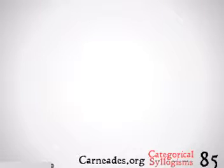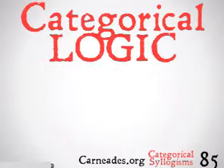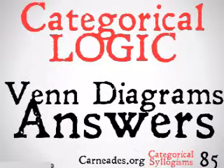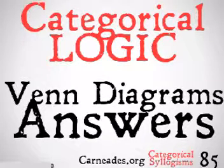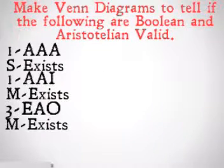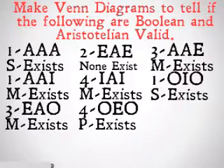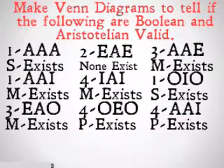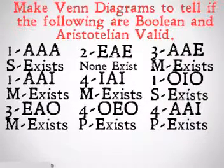Welcome back to 100 Days of Logic with Carnadius.org. Today we're going to be continuing with categorical logic and categorical syllogisms, looking at the answers to our Venn diagram problems that we offered in the last video. As with all of our answer videos, this is going to be a little bit longer so we can really flesh out why these are the correct answers. Your job is to make Venn diagrams for all of these problems to tell if they are Boolean valid and to tell if they are Aristotelian valid. It is cheating to just look at a chart that says whether or not these are valid.